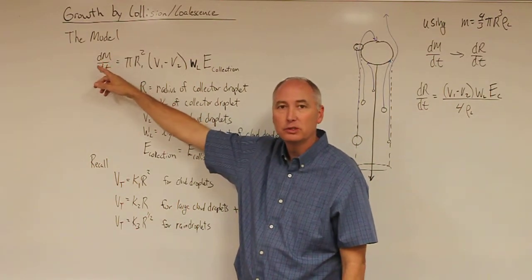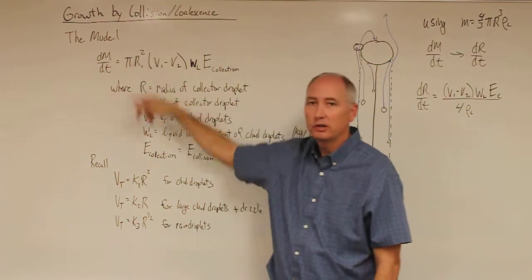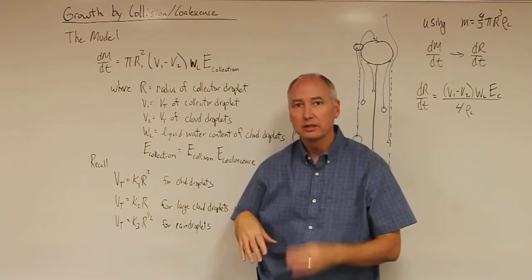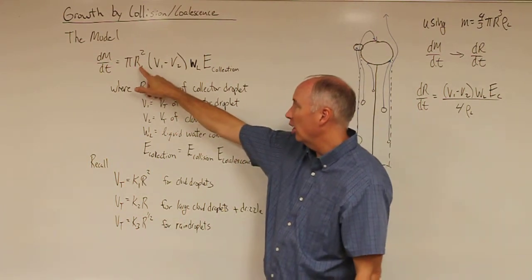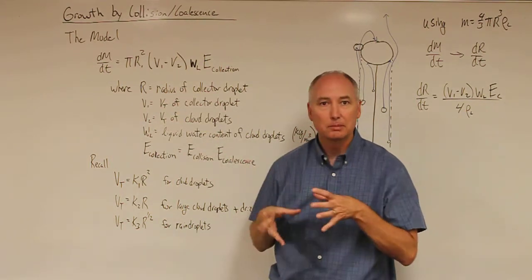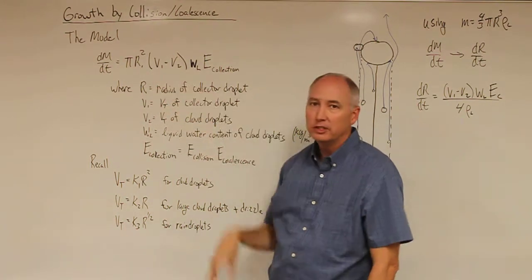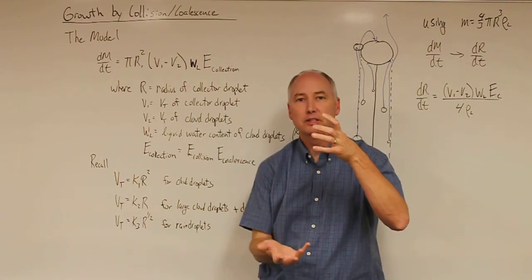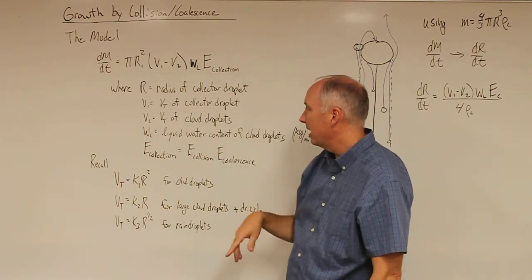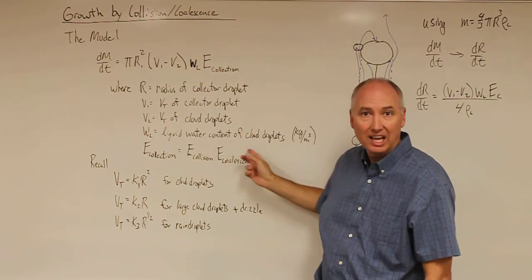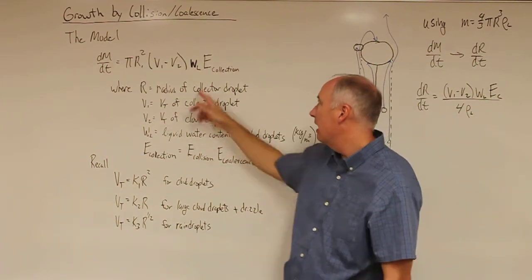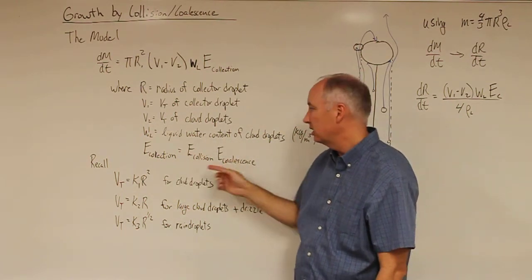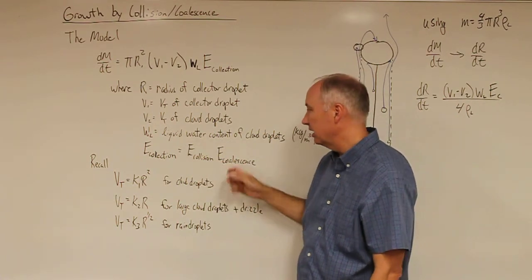In this model, the growth of an individual droplet dm/dt is equal to pi r1 squared, which is the cross-sectional area of the falling collector droplet — r1 signifying the radius of the large collector droplet. Then we have v1 minus v2, the difference in terminal velocity of the large collector droplet and the cloud droplets being collected. We have wl, the liquid water content of the cloud droplets in kilograms per meter cubed, and the collection efficiency, which is the product of the collision efficiency and the coalescence efficiency.